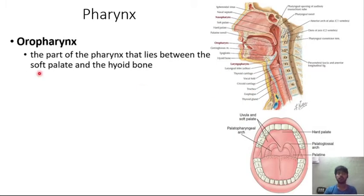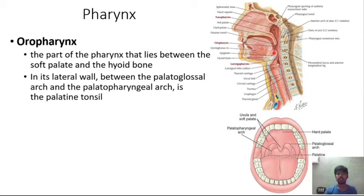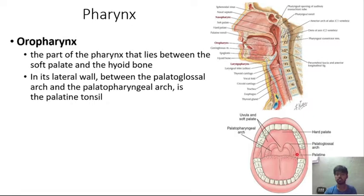The oropharynx is the part of the pharynx that lies behind the soft palate and the hyoid bone. In its lateral wall, between the palatoglossal arch and the palatopharyngeal arch, a palatine tonsil is present.